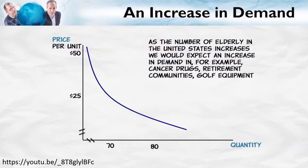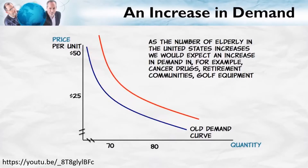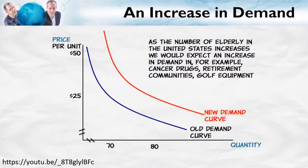As people get older, demand for retirement communities goes up, and perhaps even the demand for golf. On a demand curve diagram, as the population gets older, the demand for these products — cancer drugs, retirement communities, and golf equipment — goes up, so the curve shifts away from the origin and up to the right.